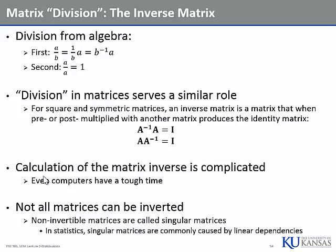Not all matrices can be inverted. If a square symmetric matrix A has an inverse, A is said to be non-singular. If A does not have an inverse, A is said to be singular. In statistics, multi-collinear data — linear dependencies among the vectors that go into A — means A will not be invertible.